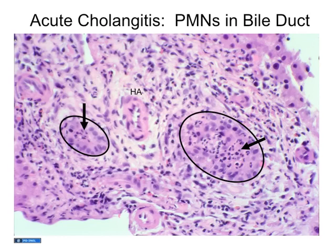Acute cholangitis is not our preferred way of making the diagnosis — we usually know the patient has cholestatic liver disease and they're febrile and septic. But if you get a biopsy at that time, you see bile ducts up in the liver with polymorphonuclear leukocytes in their lumen. You shouldn't have polys in the lumen of your bile duct — that means you've got a bad infection.